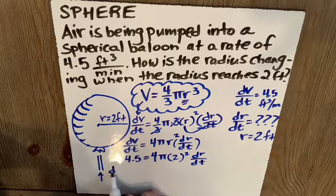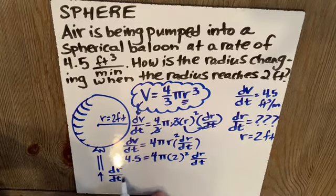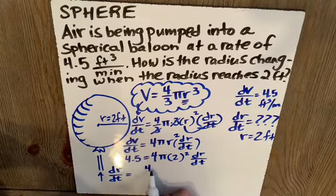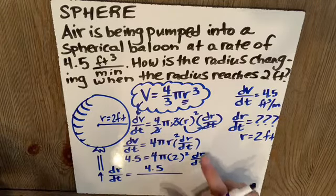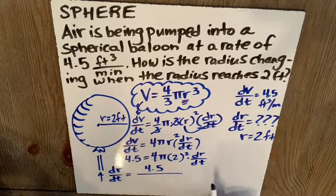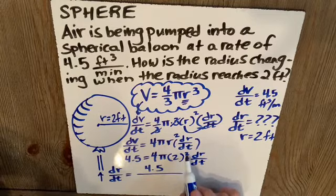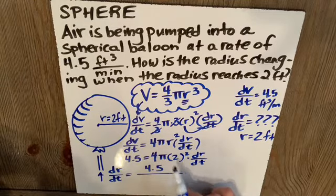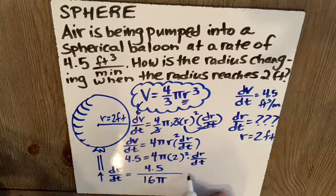So if I want to know what dr/dt is, notice what I'm going to do. I'm going to take this side, 4.5, and I'm going to divide it by whatever's not dr/dt on this side because we have multiplication there. So 2 squared is 4 times 4 is 16 pi. So I'm going to divide this side by 16 pi.